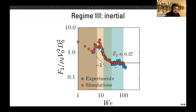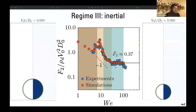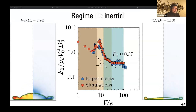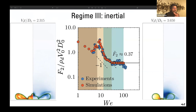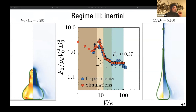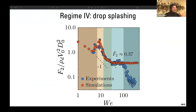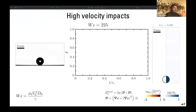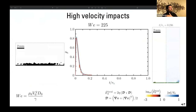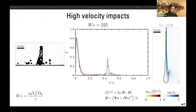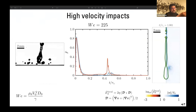Moving on, in the inertial regime F₂ again scales with the inertial pressure. I will skip the drop splashing regime in the interest of time. In experiments, beyond a critical Weber number splashing occurs and the droplet breaks into tiny satellite droplets, so the force decreases in experiments — whereas in simulations, which are axisymmetric, splashing does not happen.